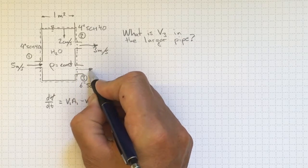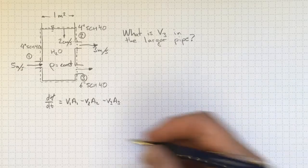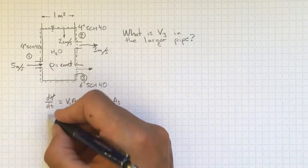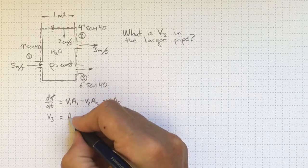I've got some flow coming out here at V3, but I don't know what V3 is. Now if I rearrange that, I can take V3 to the other side. I'll wind up with V3 equal to, still V1 A1.